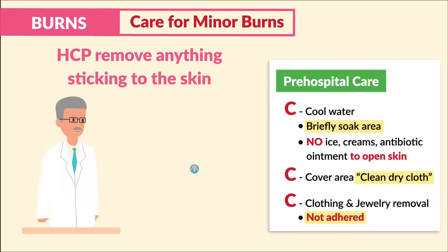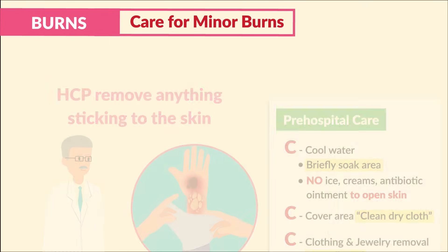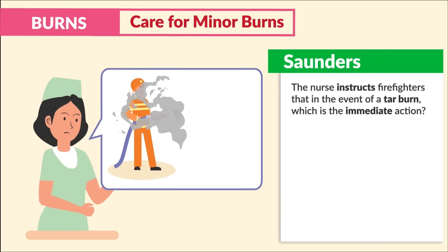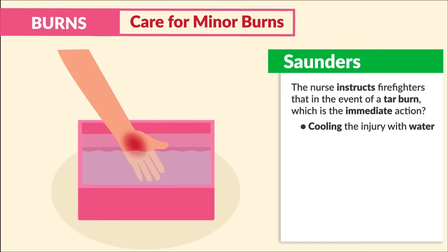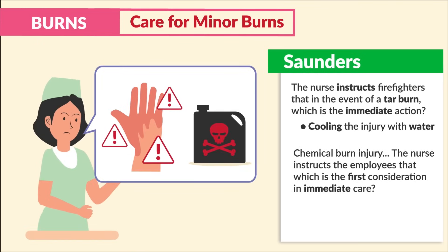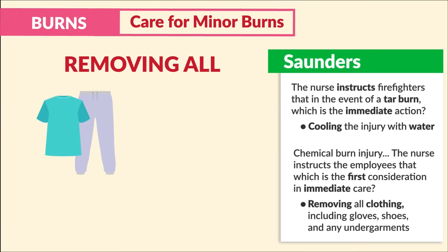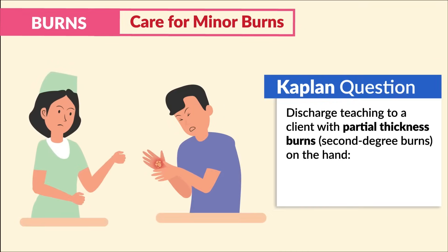The last C is clothing and jewelry removal near the burn, if not adhering to the burned skin. Only the healthcare provider should remove anything adhering to the burned skin. Saunders notes that for a tar burn, the immediate action is cooling the injury with water — that's our first C. For a chemical burn injury, the first consideration in immediate care is removing all clothing, gloves, shoes, and undergarments.